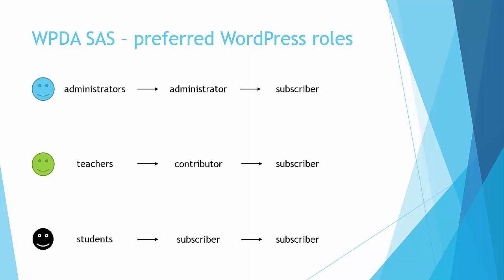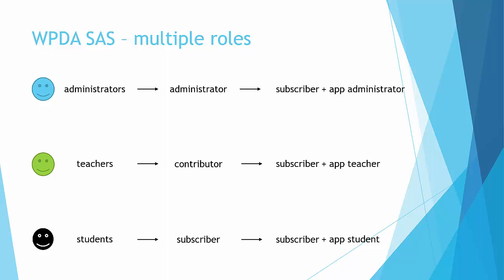The problem is that if I give all user groups the same role, I have no way to recognize which user group a user belongs to. The solution is to give a user multiple roles: the subscriber role to give them access to the dashboard, plus an application role — for example, app student, app teacher, and app administrator. Starting from version 2.7.0, the plugin allows you to create empty roles that have no capabilities, meaning no WordPress privileges are attached. They are just used to identify which user group a user belongs to.